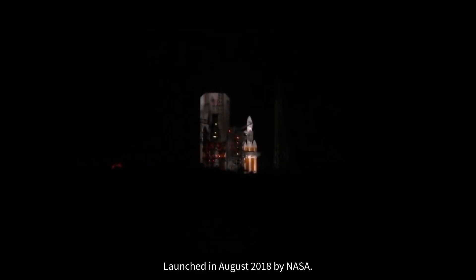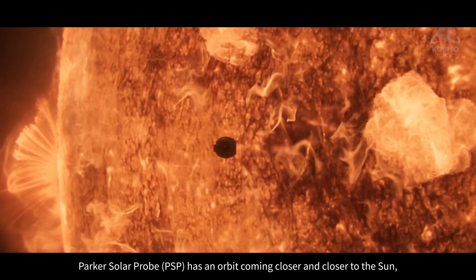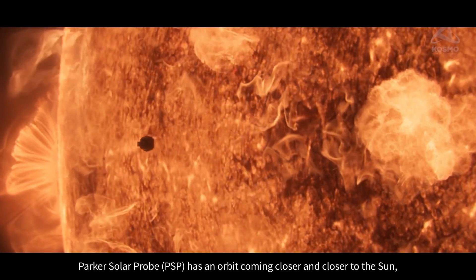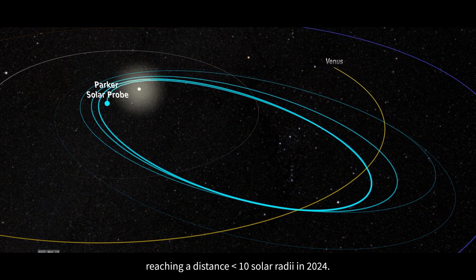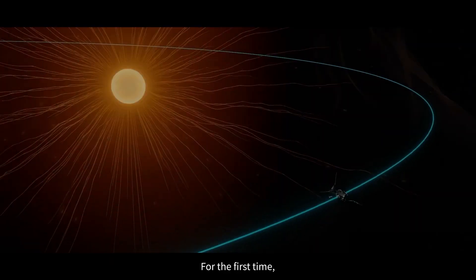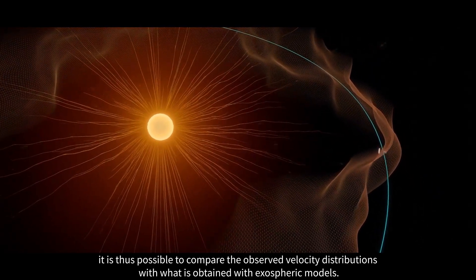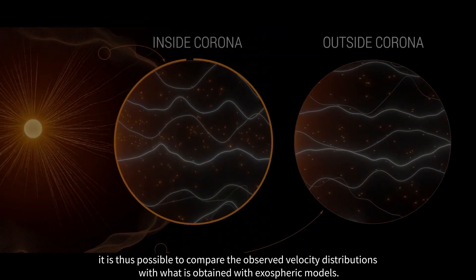Launched in August 2018 by NASA, Parker Solar Probe has an orbit coming closer and closer to the Sun, reaching a distance of less than 10 solar radii in 2024. For the first time, it is thus possible to compare the observed velocity distributions with what is obtained with exospheric models.